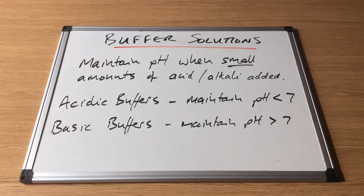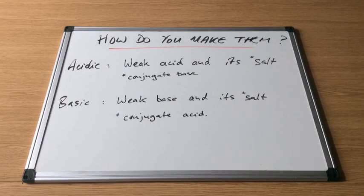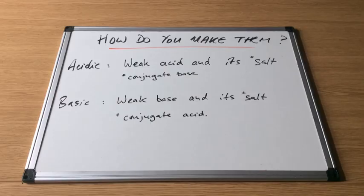There are two types of buffers. We can have acidic buffers, which maintain a pH less than 7, and basic buffers, which maintain a pH above 7. To make an acidic buffer, you need a weak acid and its salt — the salt of a weak acid is its conjugate base. For a basic buffer, you need a weak base and its salt, which is its conjugate acid.